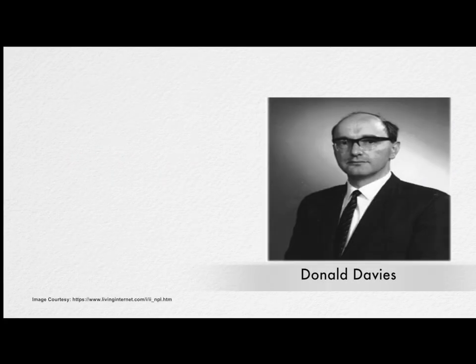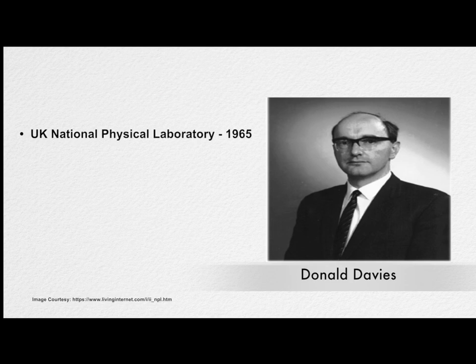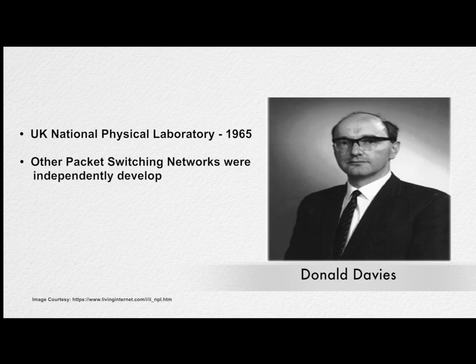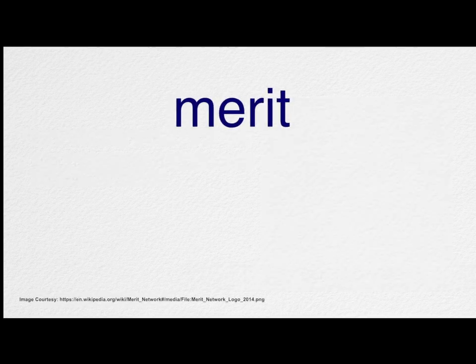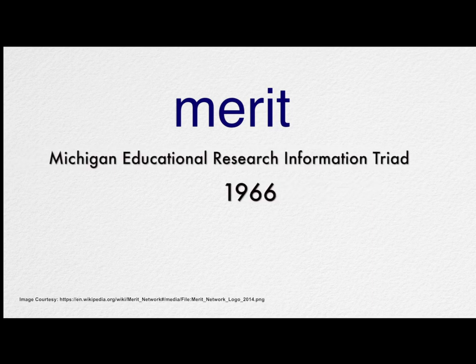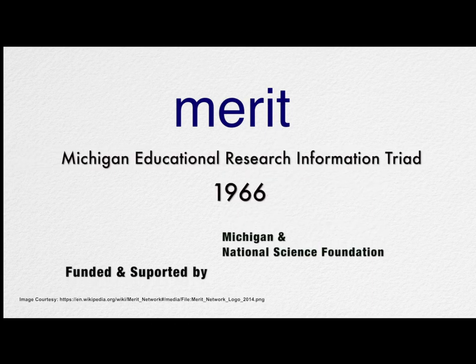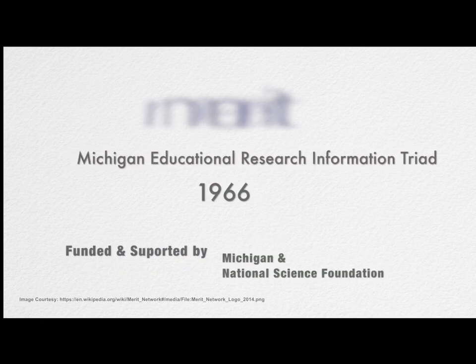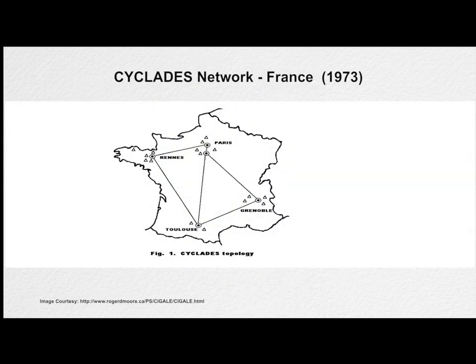In 1965, Donald Davis and his colleagues at the UK National Physical Laboratory independently discovered the idea of packet switching and later created a small-scale packet switching version of ARPANET. Michigan Educational Research Information Triad formed Merit Networks in 1966, funded and supported by the State of Michigan and the National Science Foundation. France also developed a packet switching network known as CYCLADES in 1973.